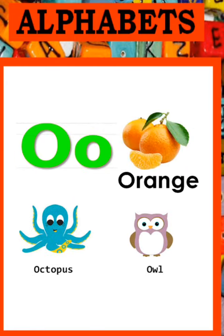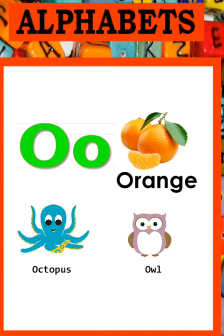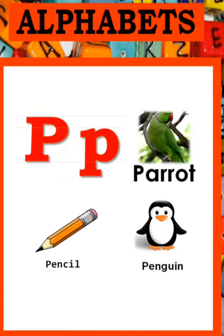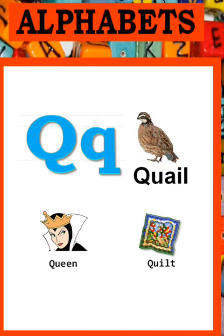O - Orange, Octopus, Owl. P - Parrot, Pencil, Penguin. Q - Quail, Queen, Quilt.